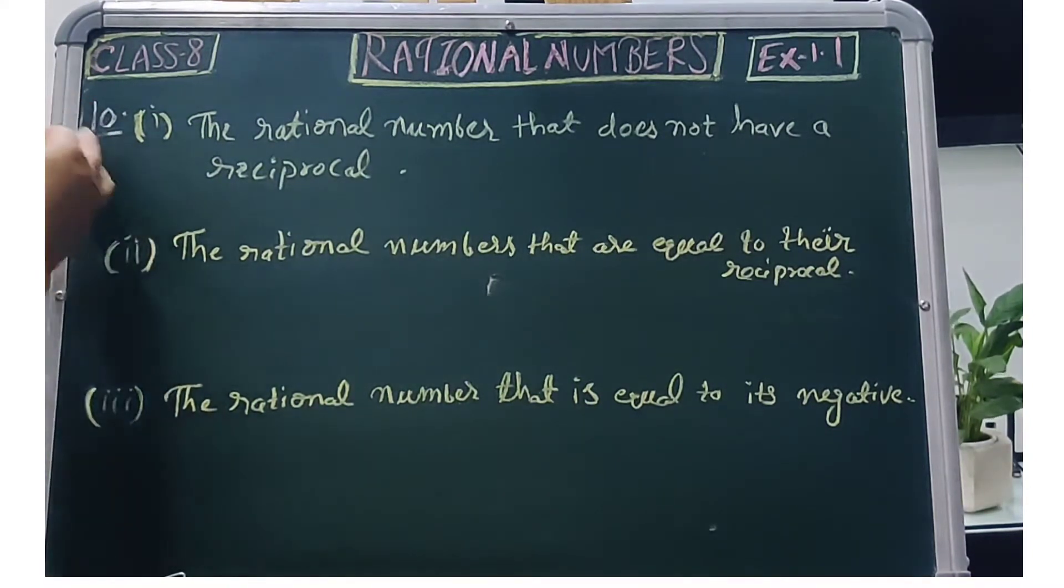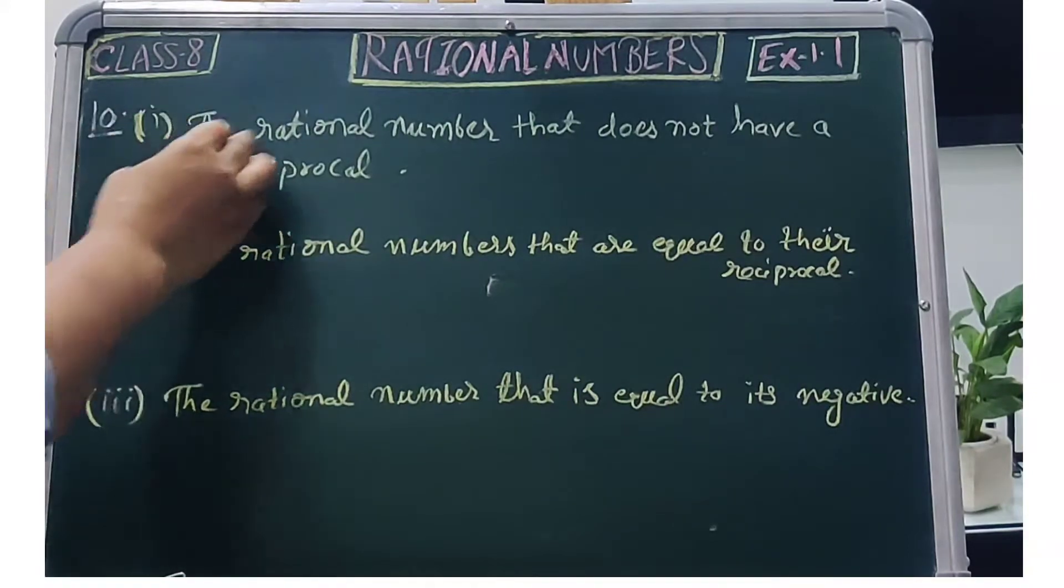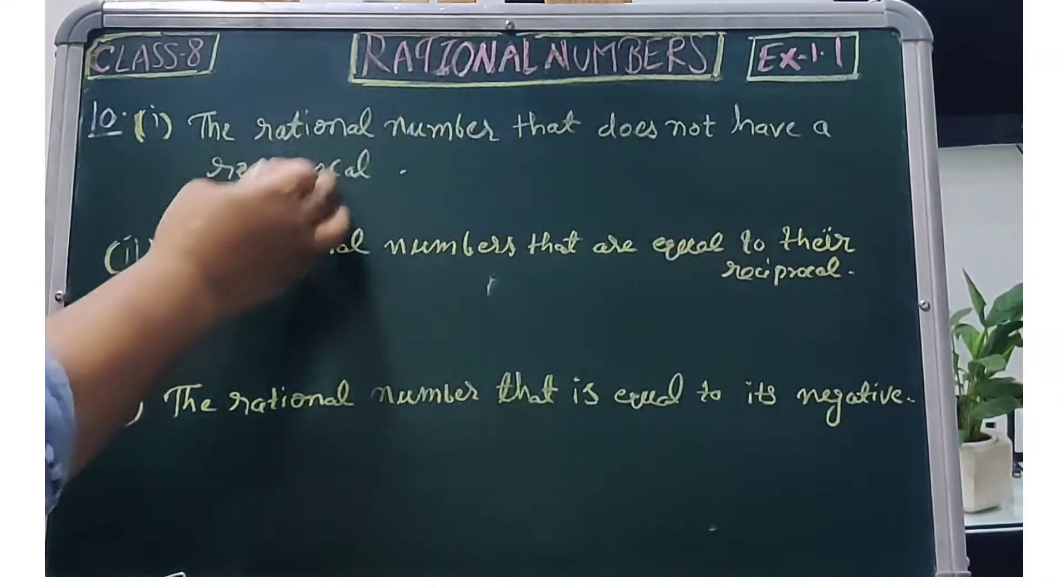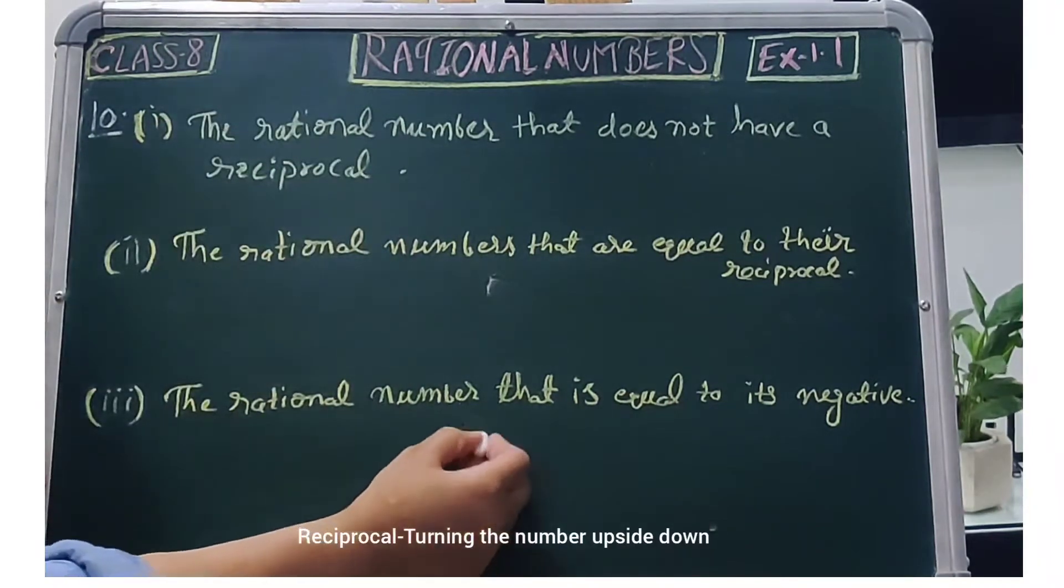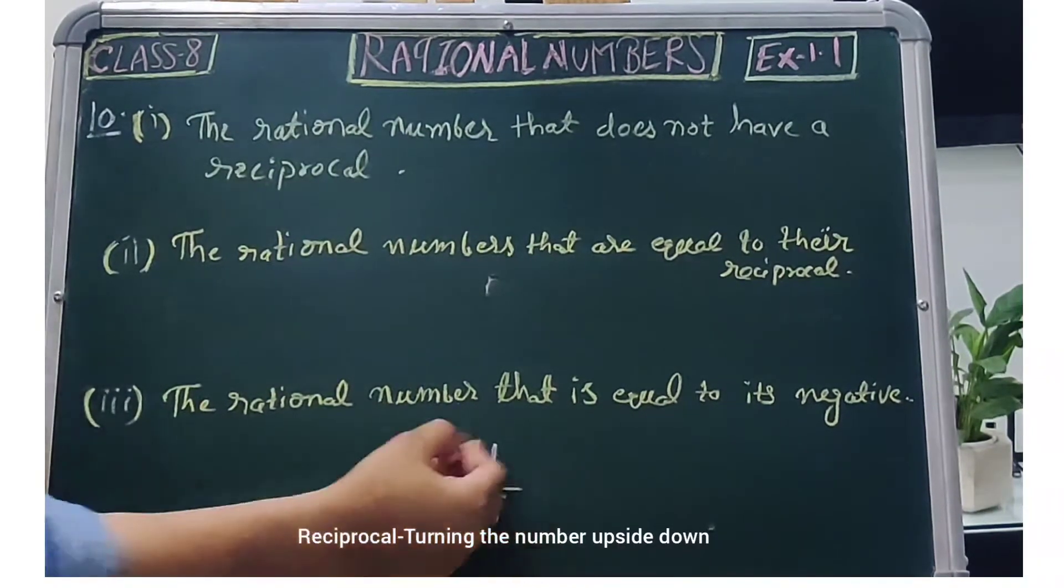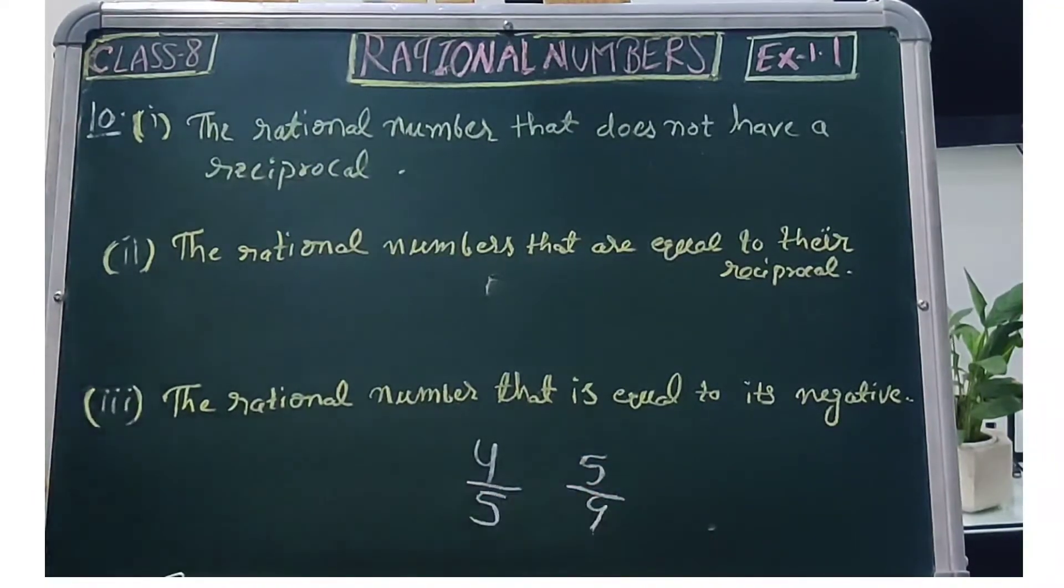So first question of question number 10 is: the rational number that does not have a reciprocal. Okay, reciprocal - what happens if your number is 4 by 5? So what is the reciprocal of this number? 5 by 4.